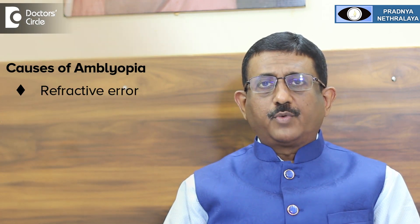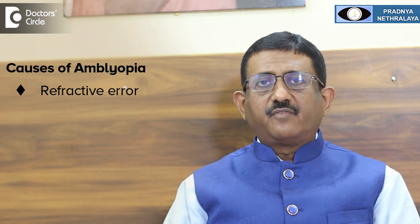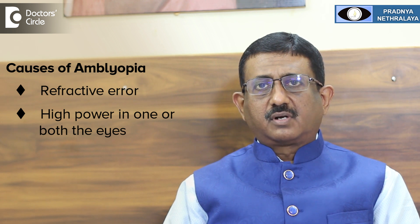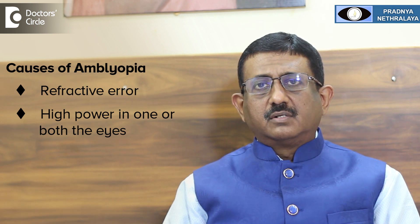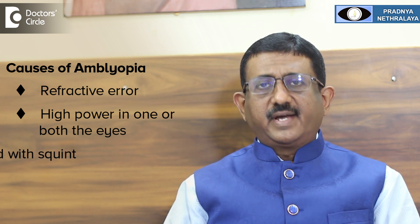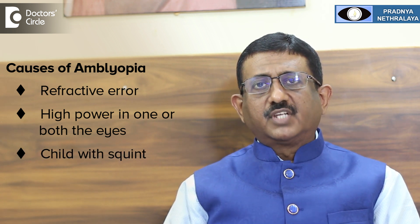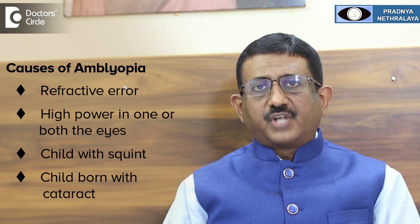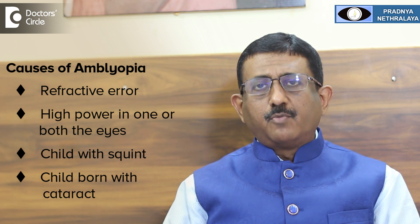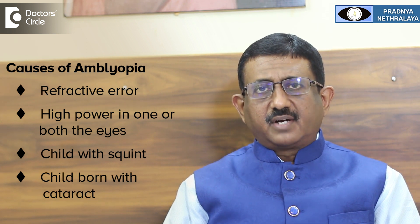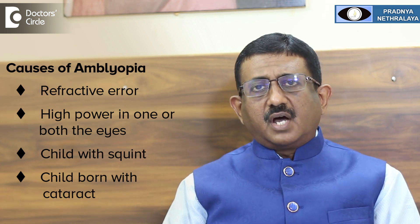What are the causes of Amblyopia? The causes may be refractive error — a child may have high power in one or both eyes. A child may be born with a squint, or a child may be born with a cataract. These are the most common causes of Amblyopia.